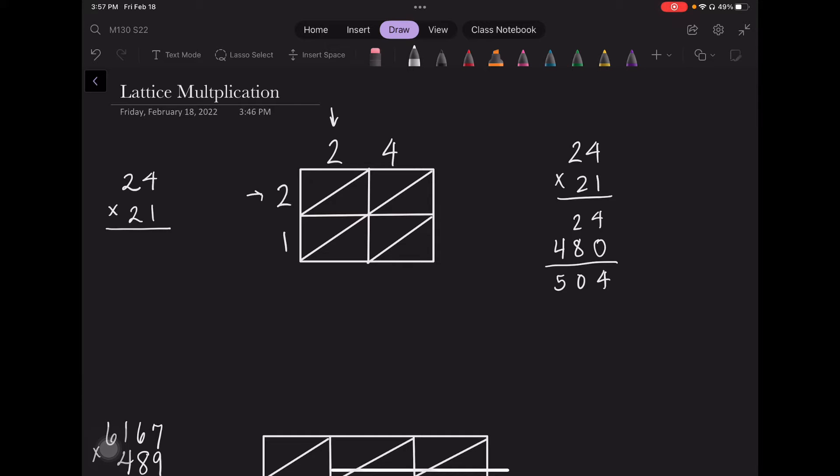Now I multiply each of the numbers like I would in an area model, but I have this diagonal so that if my number when I multiply is larger than 10, I have a place to put it. I'm not going to have that situation right now. So 2 times 2 is 4, so that's a 0, 4 here.